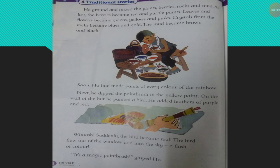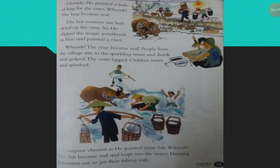He realized that it was not an ordinary paintbrush — it was a magic paintbrush. Then he went outside and painted a bale of hay for the cows, and the hay became real. There was also a river that had dried up in the hot summer sun, so he decided to paint a river and some fish. Wow — they also became real!